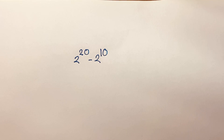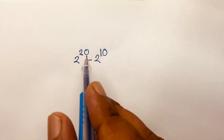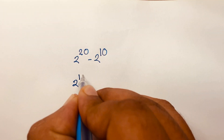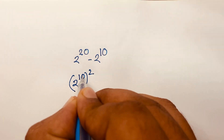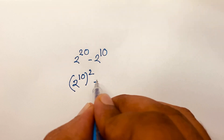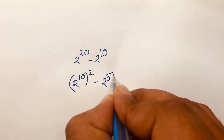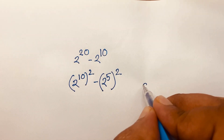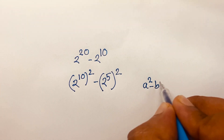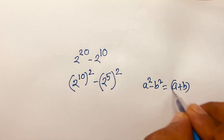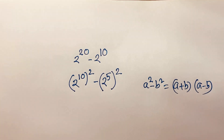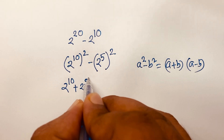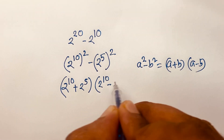How to solve this question without a calculator: 2 to the power 20 minus 2 to the power 10. I can say 2 to the power 20 is (2 to the power 10) squared, and 2 to the power 10 is (2 to the power 5) squared. We know that a squared minus b squared equals (a plus b) times (a minus b). Applying this rule, it becomes (2 to the power 10 plus 2 to the power 5) times (2 to the power 10 minus 2 to the power 5).